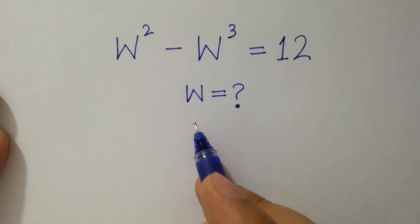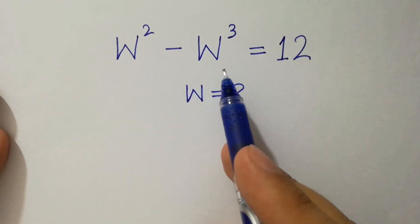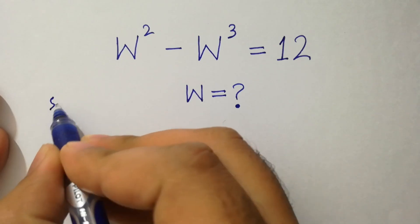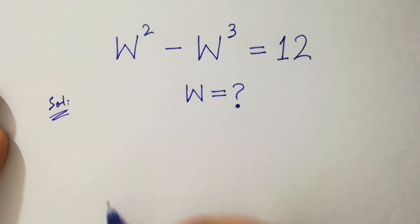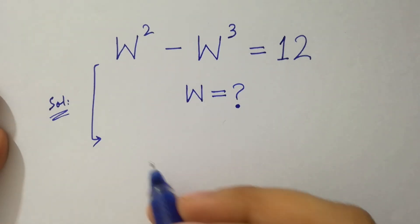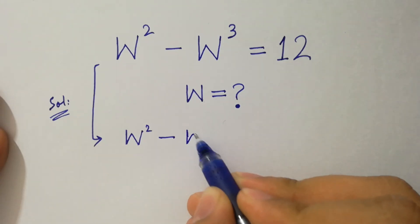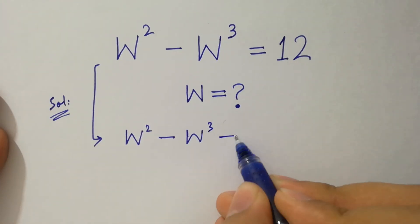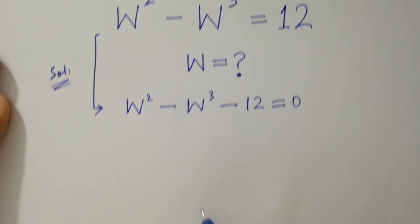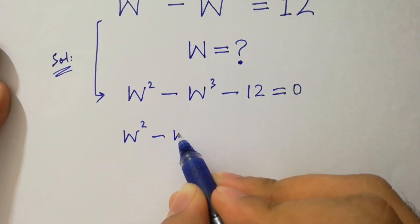Hello friends, find the value of w if w squared minus w cubed equals 12. Let's have a solution. It can be written as w squared minus w cubed minus 12 equal to 0.